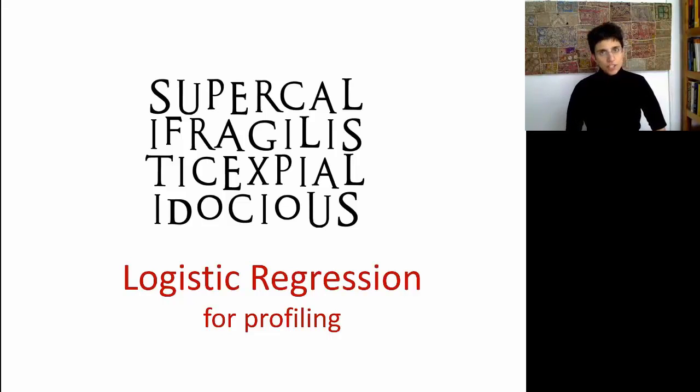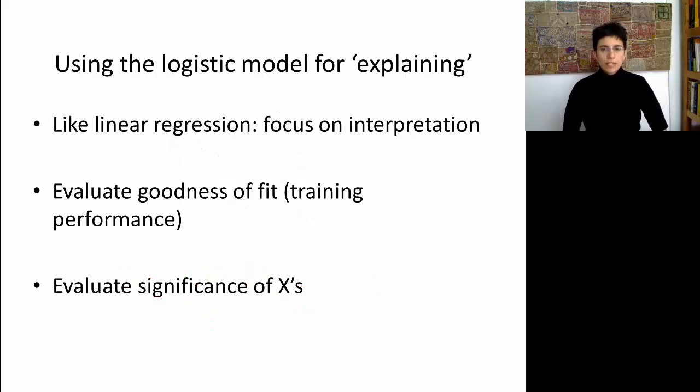In this second session on logistic regression, we're going to look at it as a descriptive tool. In the previous session, we looked at logistic regression for predicting new records. But like linear regression, this can actually also be used for explaining or for describing a relationship between a y and a set of x's. So now we're going to focus on the interpretation and show you why logistic regression is so useful for explaining a categorical outcome.